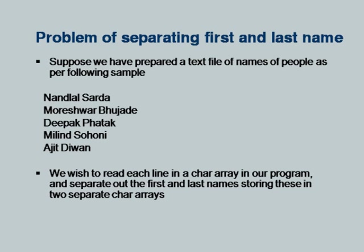What we wish to do is read each line in a character array and separate out the first and last names, storing them in two separate character arrays. We will look at reading just one line — one string — from input, separating out the first name and the second name.